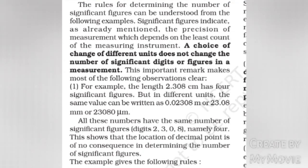The rules for determining the number of significant figures can be understood from the following examples. Significant figures indicate, as already mentioned, the precision of measurement which depends on the least count of the measuring instrument.